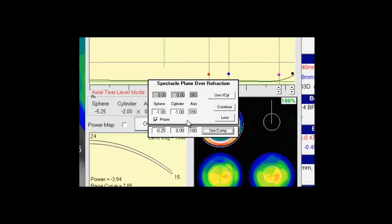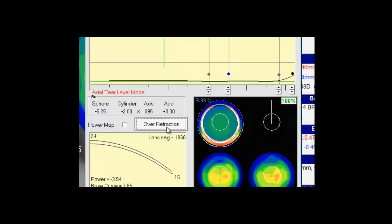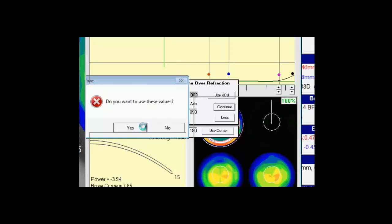In this case, I messed up and put too many values in there. So if I hit continue, it will ask me do I want to use these values. I can simply say no, and when I hit this box, I'll be back to my original. I'll hit more, add my compound over-refraction, hit use comp, confirm the values that I want, hit continue. Do I want to use these values? Yes.